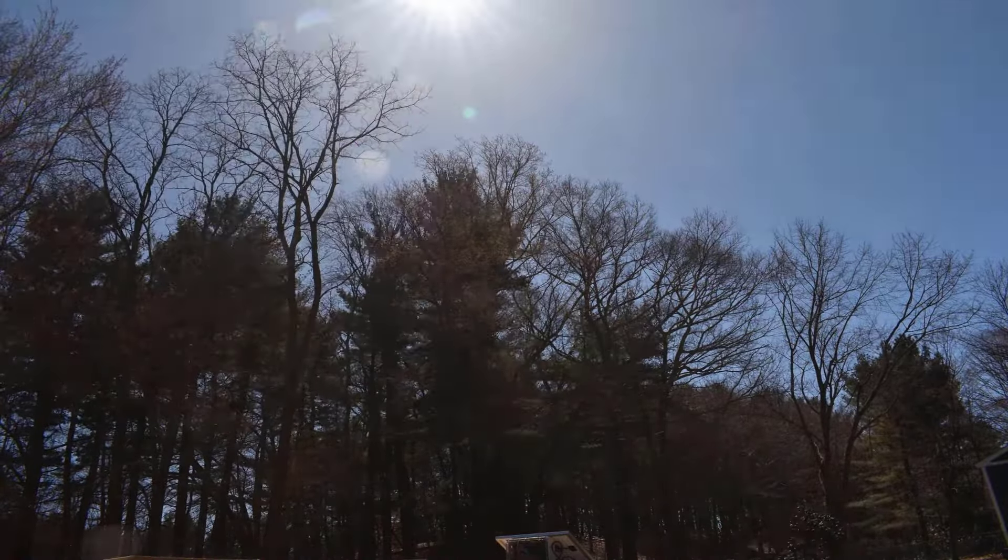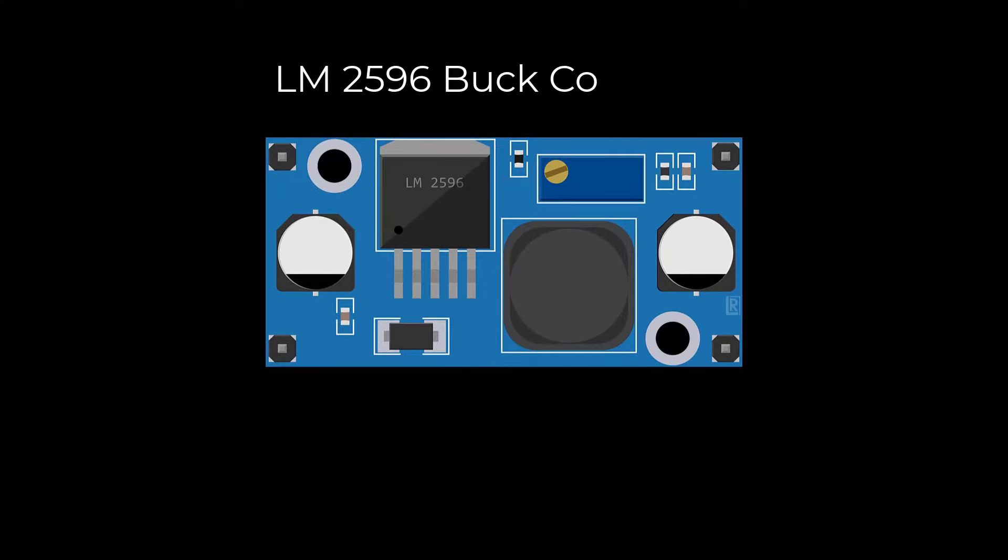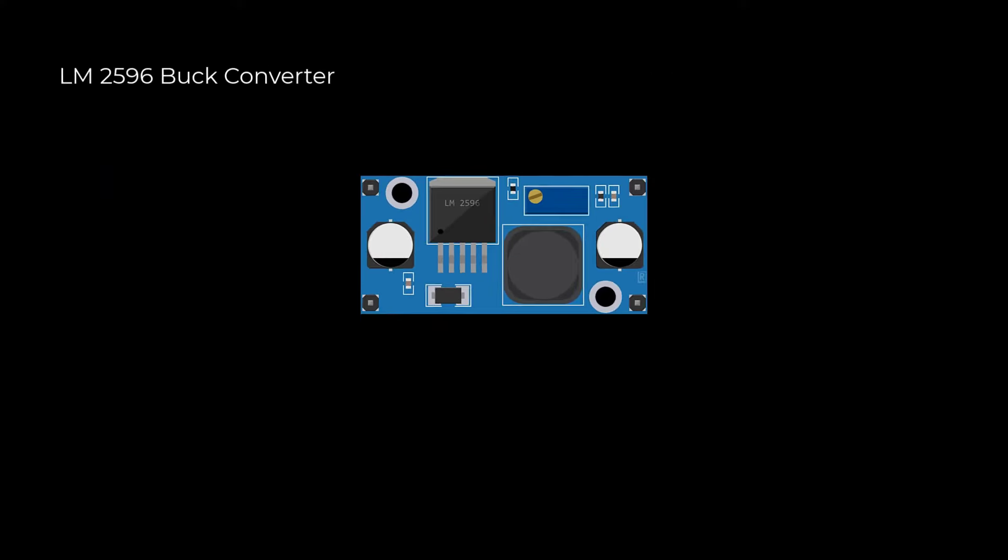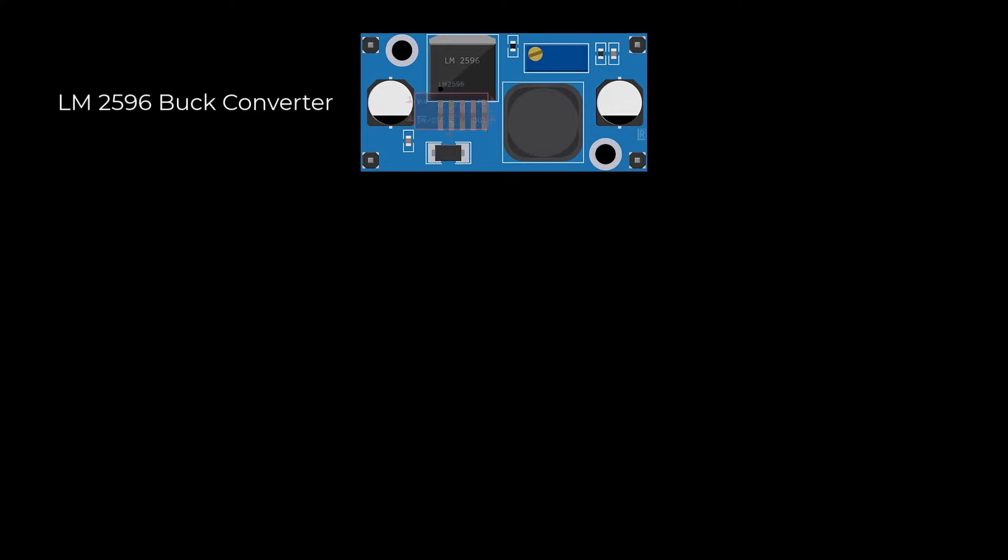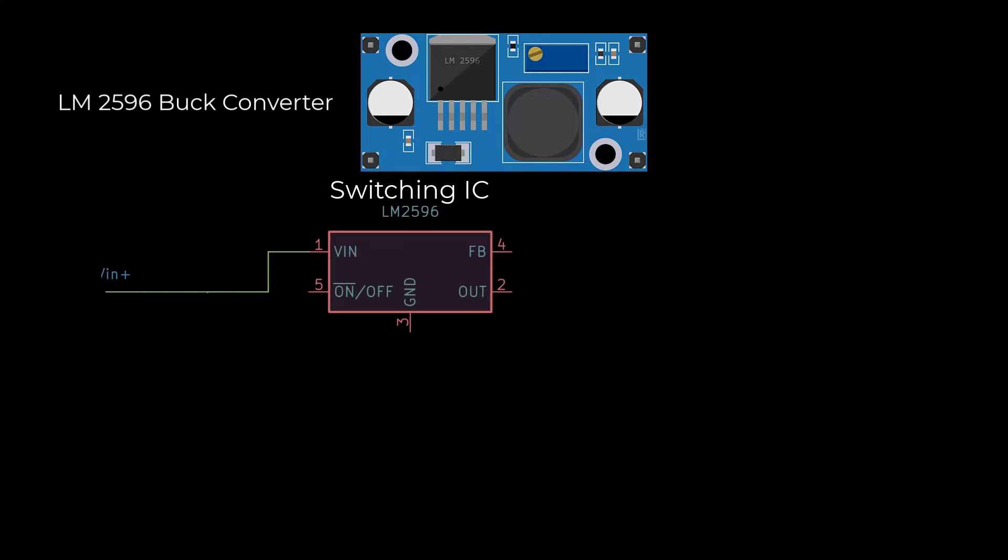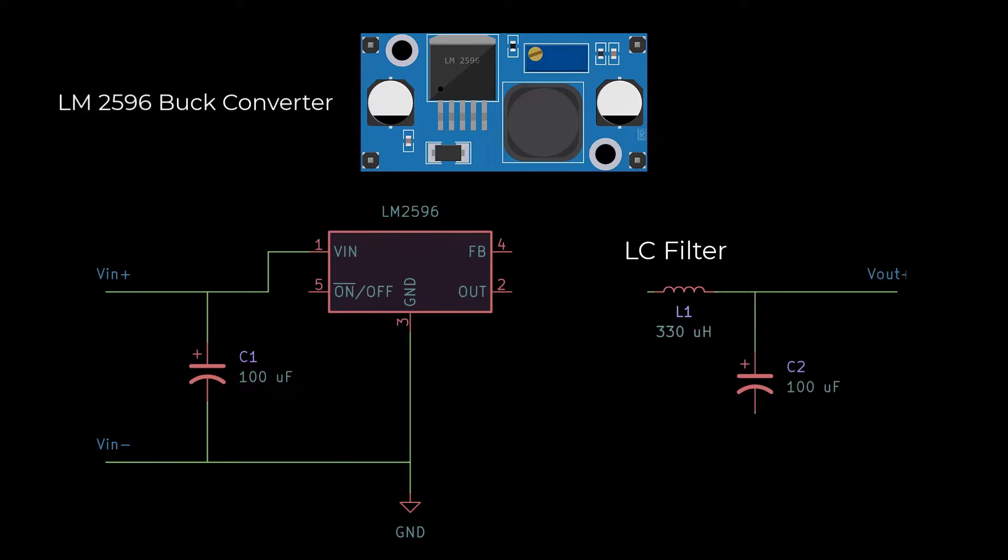I'll show you how to build a regulator that is essentially a controllable buck converter. A standard buck converter regulates voltage using three components: an integrated circuit that switches the voltage source on and off, an LC filter that reduces high frequencies in the output, and a feedback circuit that drives the steady output voltage.